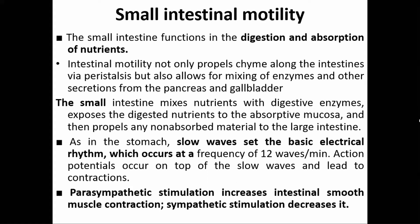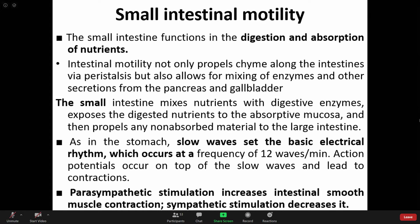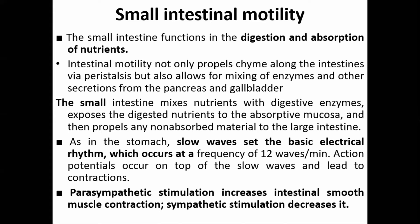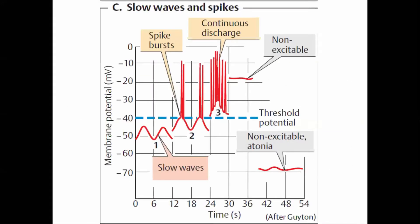The frequency of the basic electrical rhythm is different in different segments of the intestine — it is about 12 waves per minute. The basic electrical rhythm consists of slow waves, which are rhythmical fluctuations of membrane potential occurring from minus 65 to minus 45 millivolts. These slow waves are generated by the influx of sodium and efflux of potassium and sodium ions.